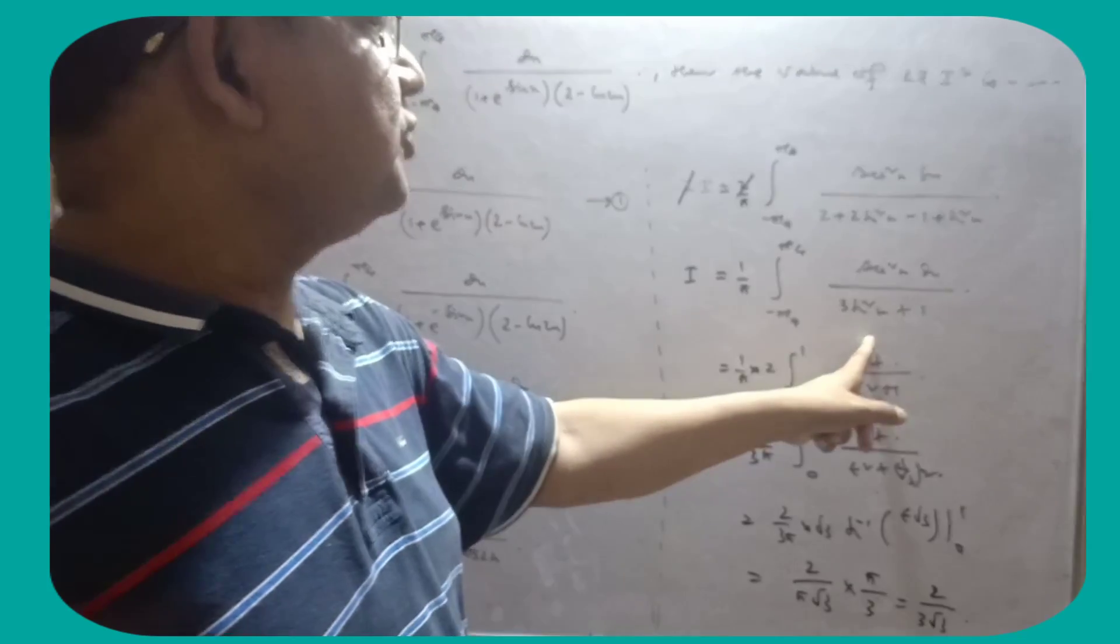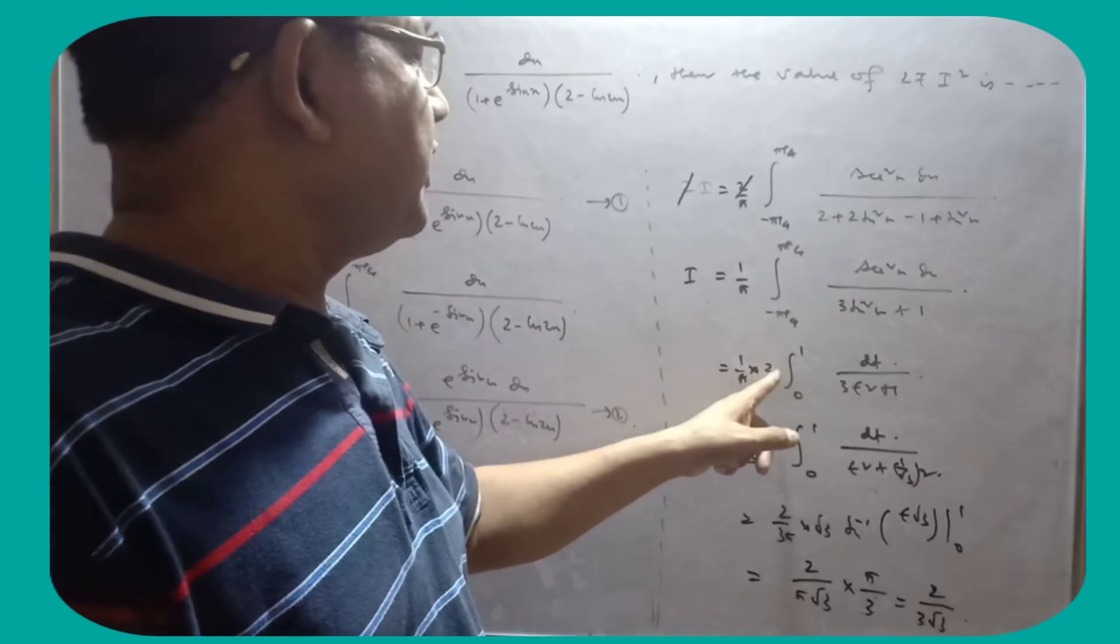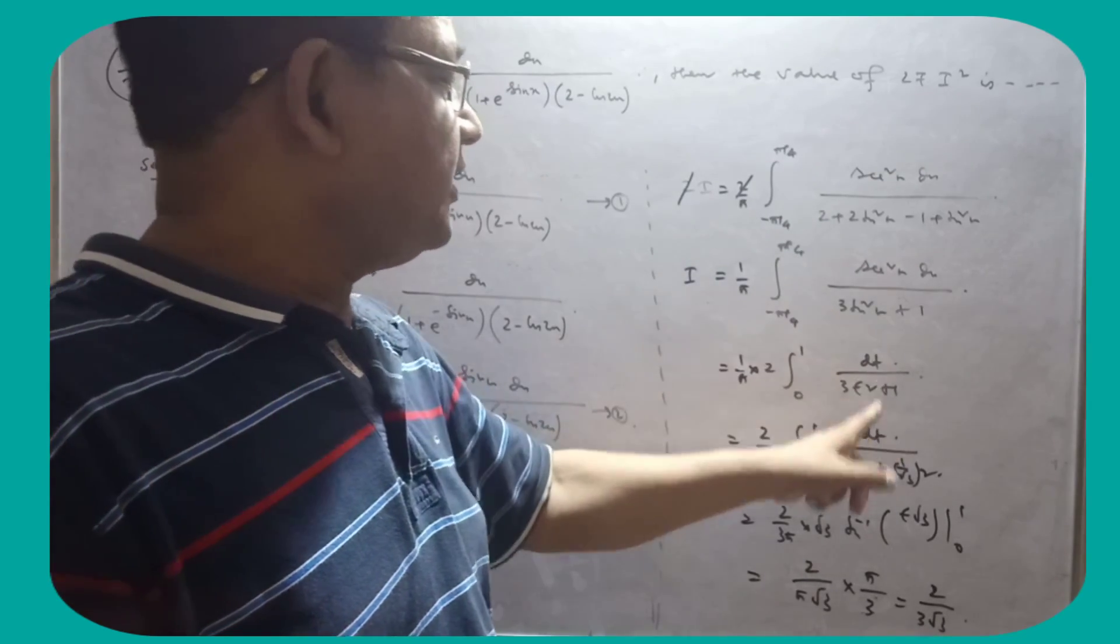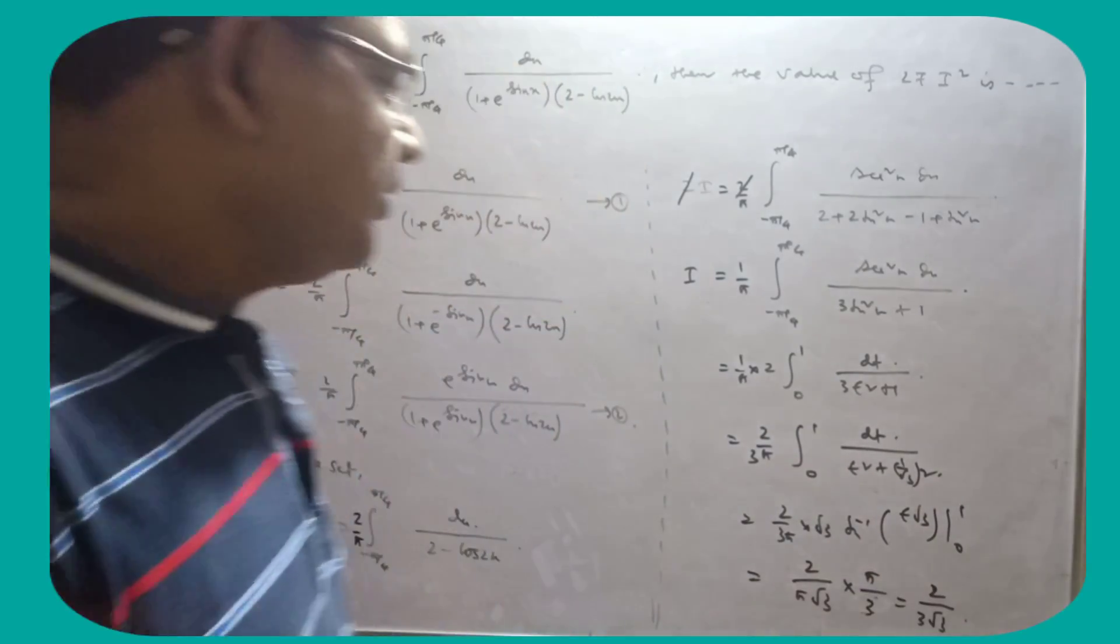Abhi, tan x equal to t, sec square x dx is dt hai. Limit ko change karna, even function size is equal to x twice ke liya. And tan x of t hai, so ee kya hoga? 0 se 1 dt by this. Isse ko simple integration kiya, ee value mil liya.